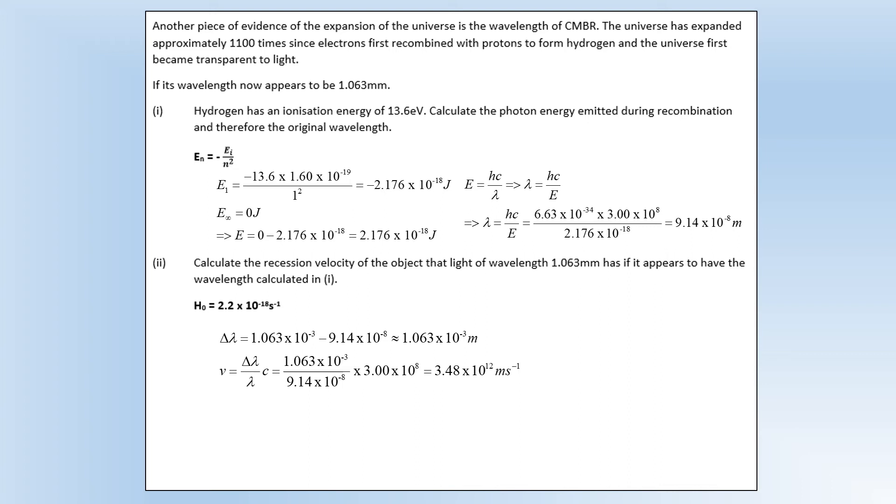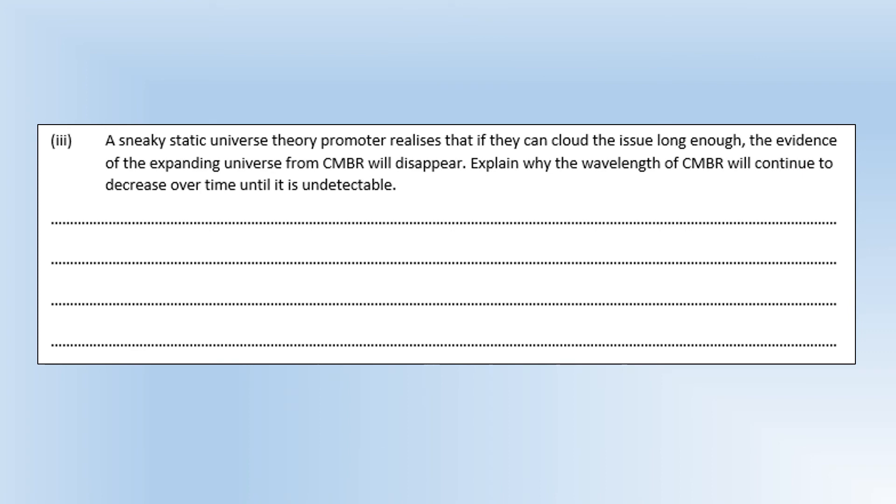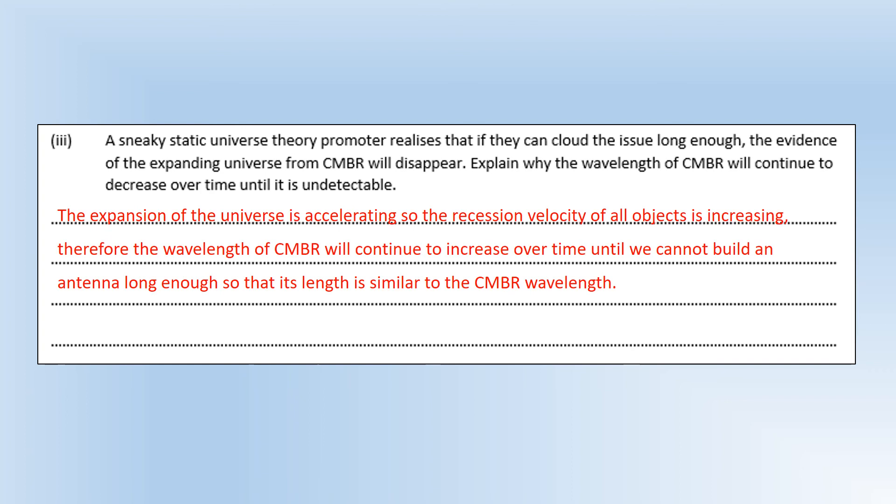Okay, so a sneaky static universe theory promoter realizes that if they can cloud the issue long enough, the evidence of the expanding universe from CMBR will disappear. Explain why the wavelength of CMBR will continue to decrease over time until it's undetectable. Okay, so the reason being that the universe is expanding and the expansion is accelerating, so the recession velocity of all objects is increasing over time. And what that means is the wavelength of CMBR will continue to increase over time until we get to a point where we can't build an antenna long enough to detect it anymore, because to detect something using antenna you need the antenna to be the same length or similar to its radiation. And if it becomes too long we're not going to be physically able to do that anymore.